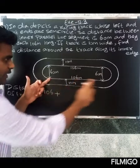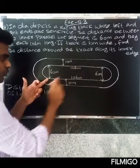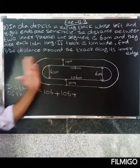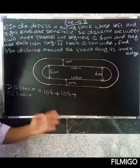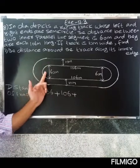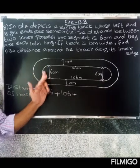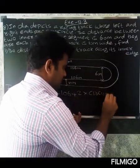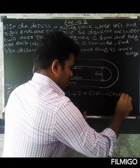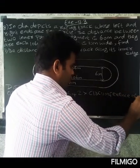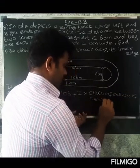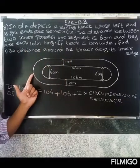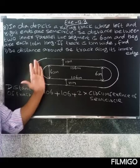So distance of track equals 106 plus 106, plus two into the circumference of a semicircle.